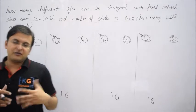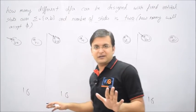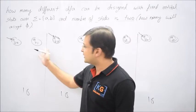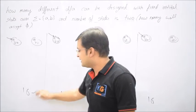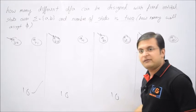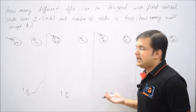So no matter what transition you take, nothing is going to be accepted for sure because both the states are non-final. So let me say all 16 DFAs will have empty language because no state is final.